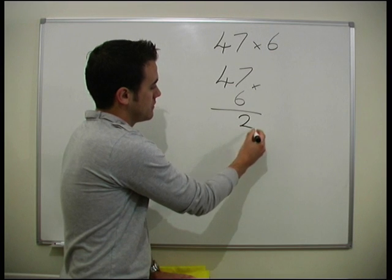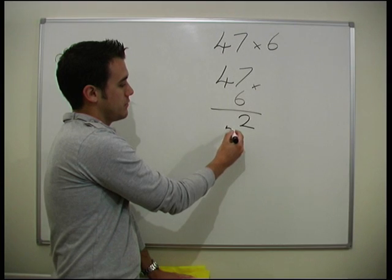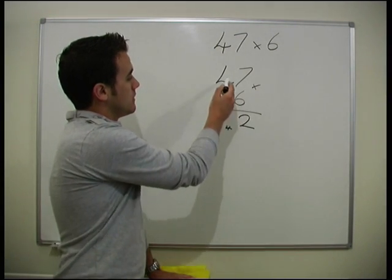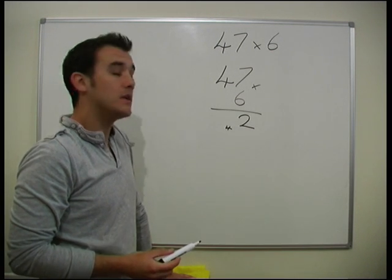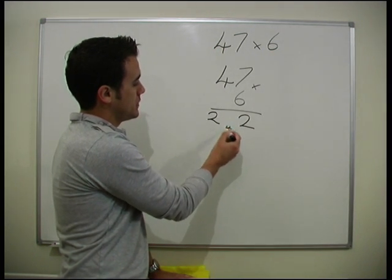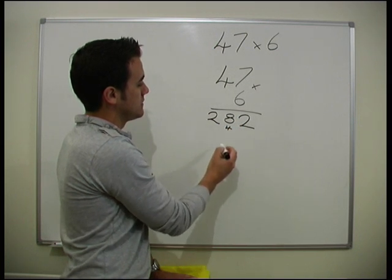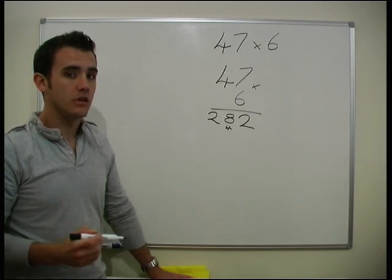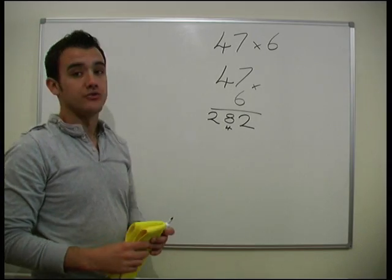So you put the 2 in here, and we'll put the 4 here to be added on. 6 times 4 is 24. So we've got the 2 here, 24, plus the 4 we had from before, is 28. So we get our answer of 282. And that's the straightforward. So 47 times 6 is 282.